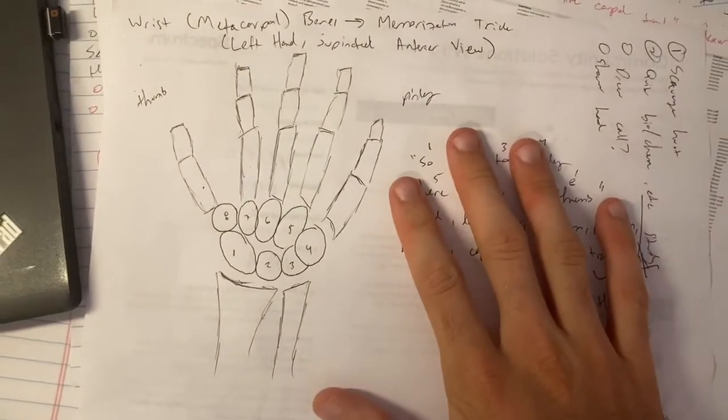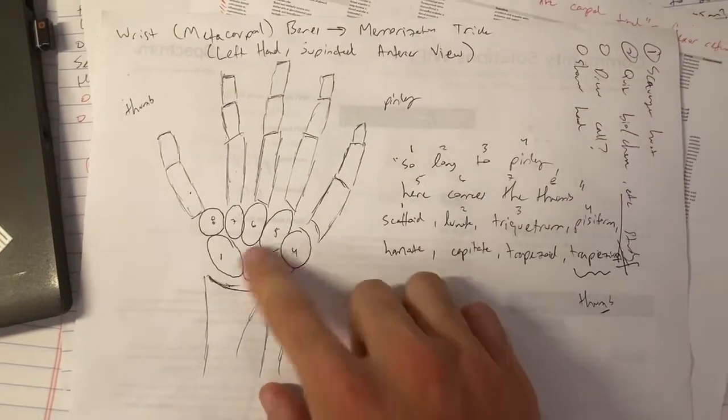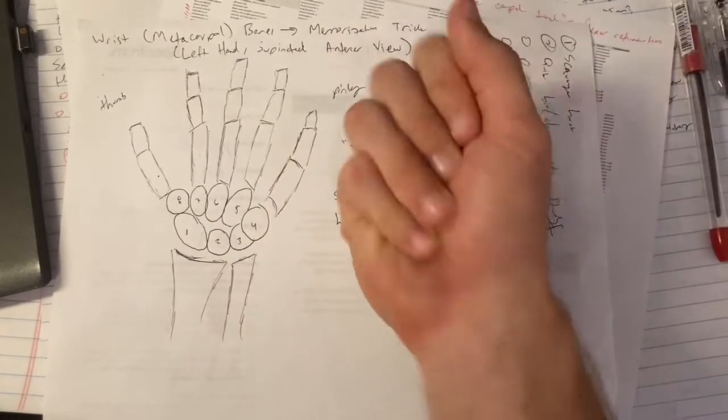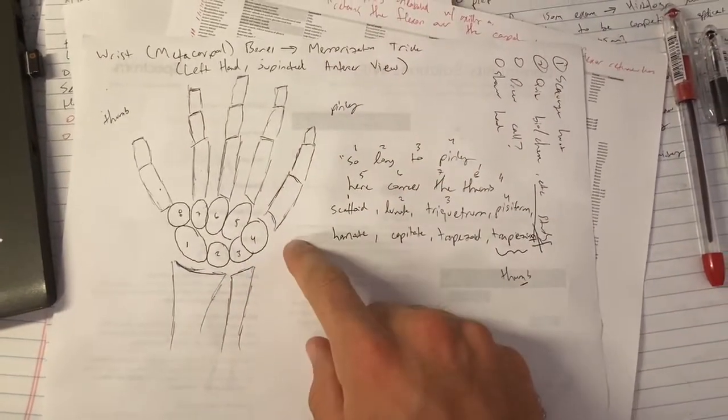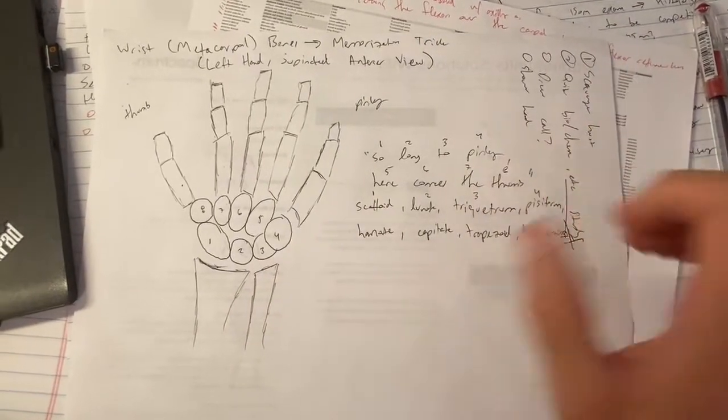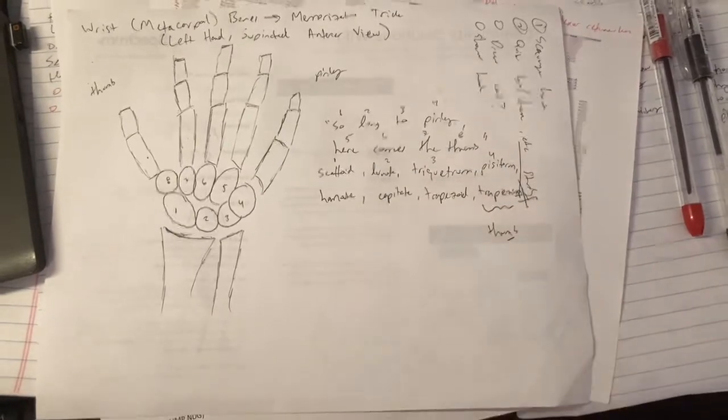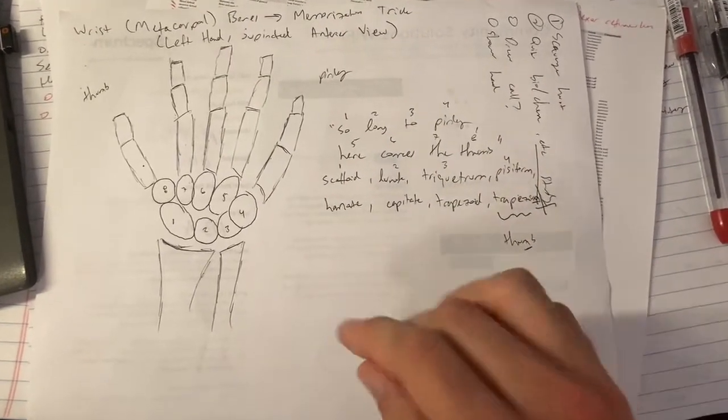Hey guys, in this video we are going to be looking at the eight little bones that make up the bones in your wrist. There's a lot of names - every single one of them has their own name. So I'm going to walk through a little memorization trick. I did not create this, but this is the memorization trick that I'm using to help remember this stuff.